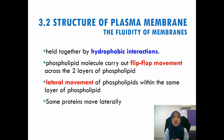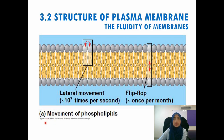Some proteins move laterally, but many membrane proteins are actually immobile. Looking at this figure showing the movement of phospholipids: lateral movement means it can move sideways within the same layer, and this movement is quite rapid. The flip-flop movement is movement between the two layers of phospholipid, and this movement only occurs about once per month.